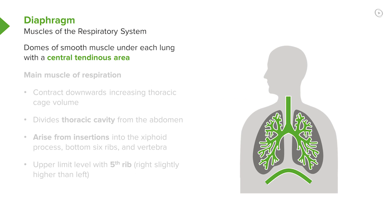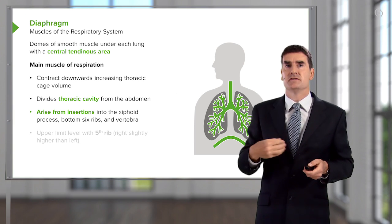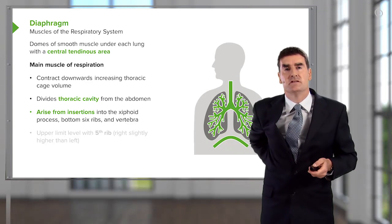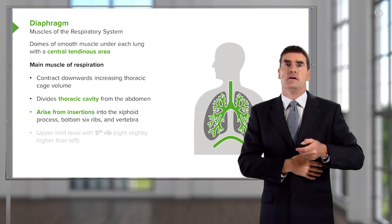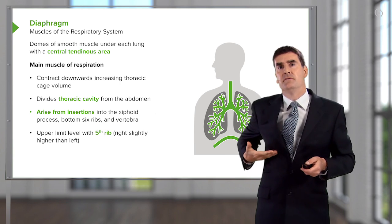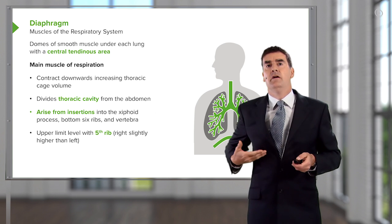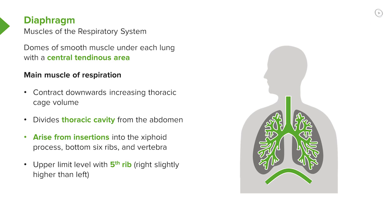The diaphragm itself is a smooth muscle placed under each lung between the thoracic cavity and the abdomen. It has a central tendinous area and is essentially the main muscle of respiration. When it contracts, it flattens the domed diaphragm and expands the lungs downwards. The diaphragm arises from insertions on the xiphoid process anteriorly, the vertebrae posteriorly, and the bottom six ribs around each side. The upper limit of the diaphragm is at the fifth rib at rest, and it sits slightly higher on the right due to the liver beneath it.